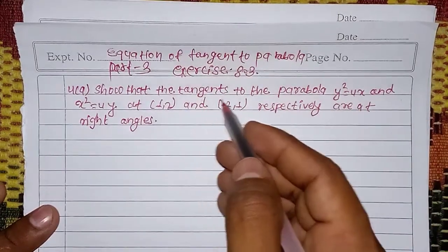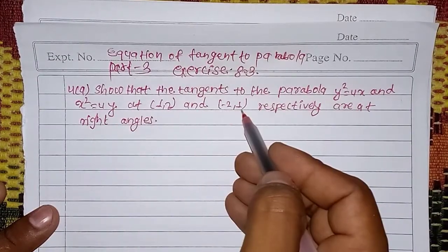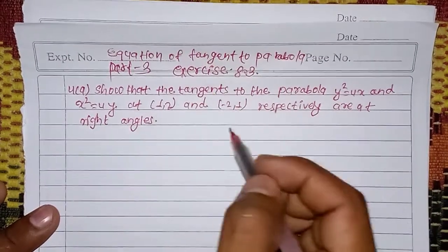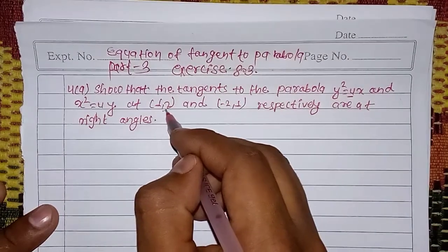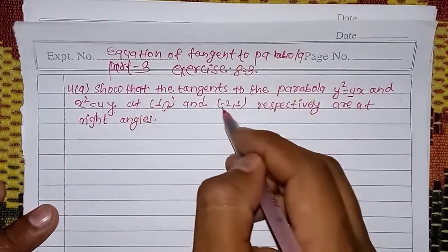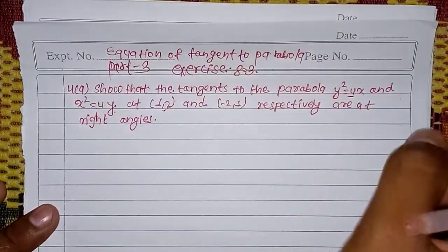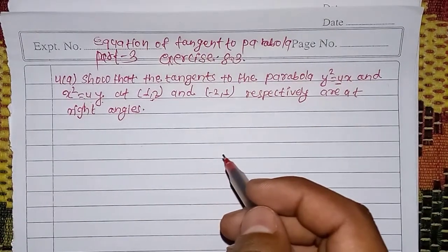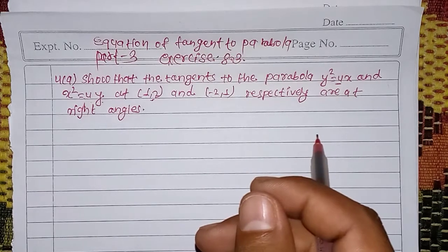We have to show that the parabolas y²=4x and x²=4y, at the points (1,2) and (-2,1) respectively, intersect at right angles. So we have the parabola y²=4x at (1,2) and the parabola x²=4y at (-2,1). We need to add the right angles.